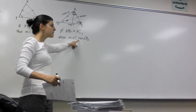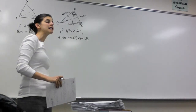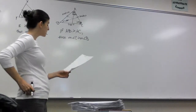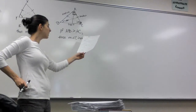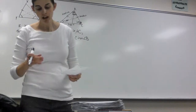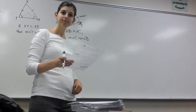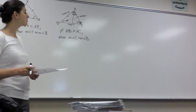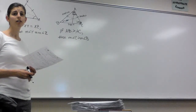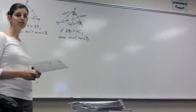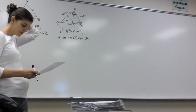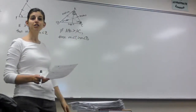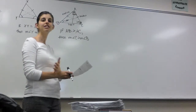That's an inequality symbol — bigger than, greater than. The measure of angle C is bigger than the measure of angle B, because C is across from the longest side. In the book, they'll tell you which sides are longer than others, and you conclude that the angles across from those sides have the same relationship. The longest side is always across from the biggest angle, and vice versa.